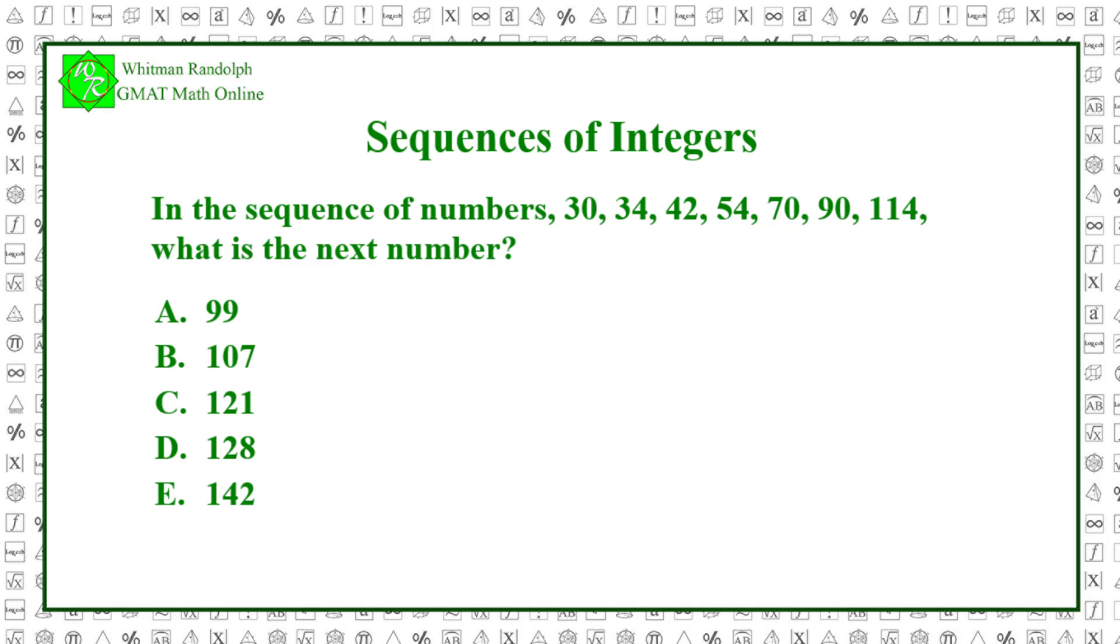Notice that the difference between numbers is increasing by 4 with each number. For example, from 30 to 34, the distance is 4, but from 34 to 42, the distance is 8, and from 42 to 54, the distance is 12, and so forth.